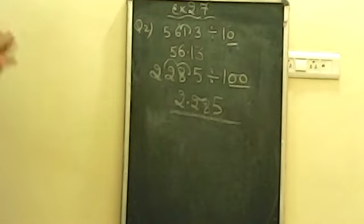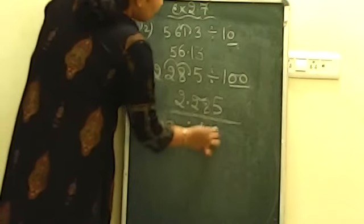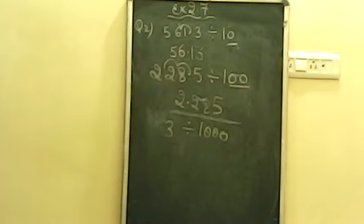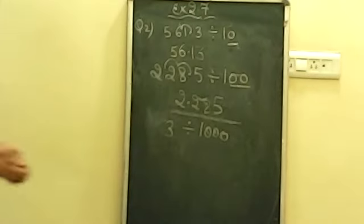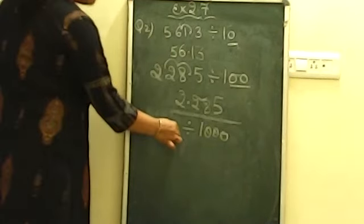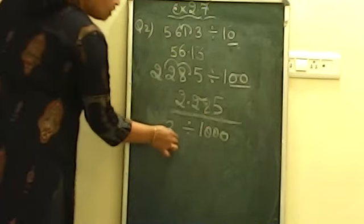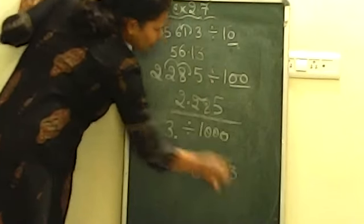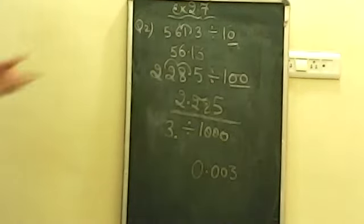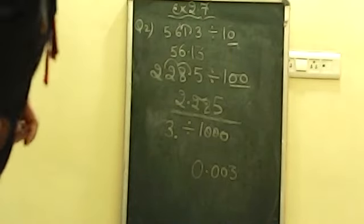2.285 will be the final answer. Now let us give you one more question: 3 divided by 1000. Try this question — here there is a decimal to deal with. If any number is not having a decimal, you assume that the decimal is after 3. So the answer will become 0.003. You give zeros as needed and you can do it.